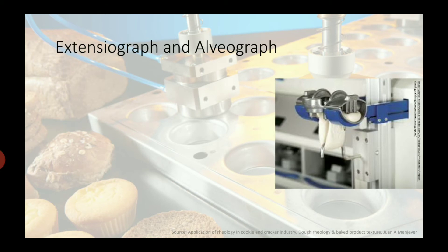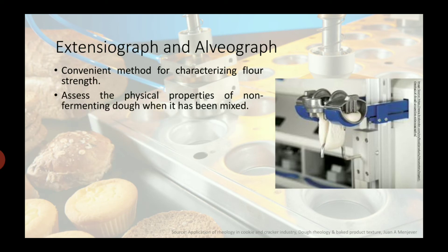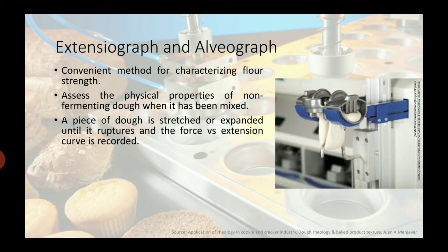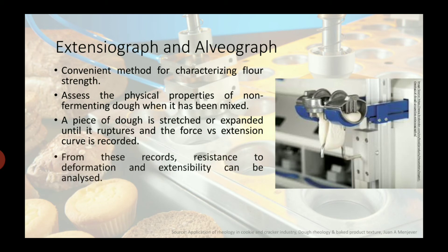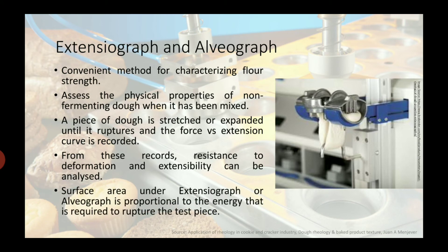The Extensiograph and Alveograph are instruments available to assess the physical property of non-fermented dough. When it has been mixed, it is a convenient method for characterizing flour strength. A piece of dough is stretched or expanded until it ruptures and the force versus extension curve is recorded. From this record, resistance to deformation and extensibility can be analyzed. The surface area under the Extensiograph or Alveograph curve is proportional to the energy required to rupture the test piece.